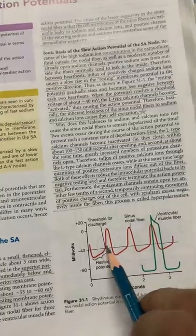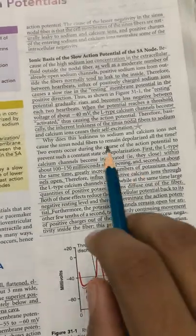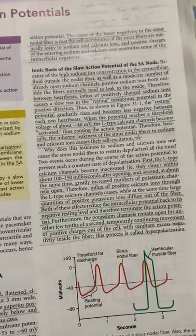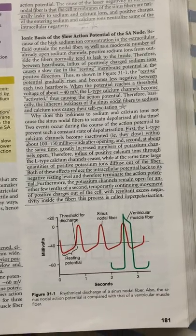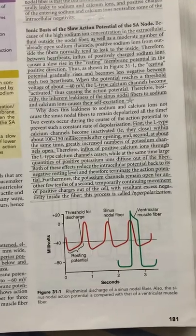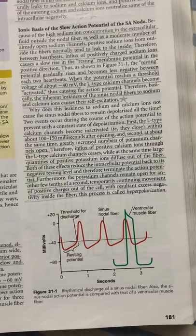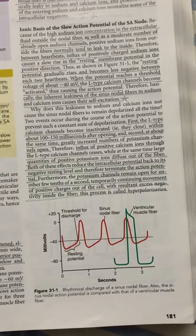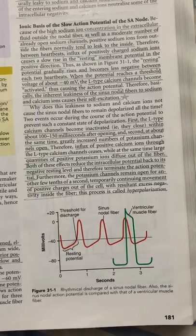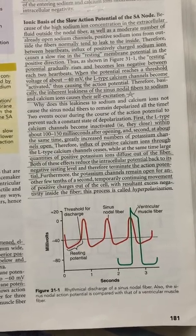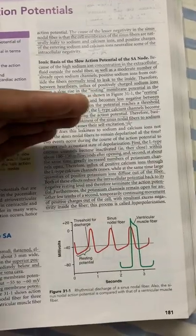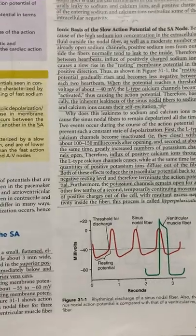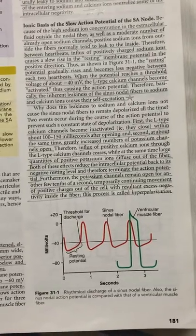At threshold, L-type long-lasting calcium channels become activated, causing calcium influx and depolarization, which produces the action potential. This self-excitation is due to the inherent leakiness of the sinus nodal fibers to sodium and calcium ions. The L-type calcium channels become inactivated within 100 to 150 milliseconds after opening. At the same time, permeability for potassium increases, causing potassium efflux. Both effects reduce the intracellular potential back to its negative RMP and terminate the action potential.